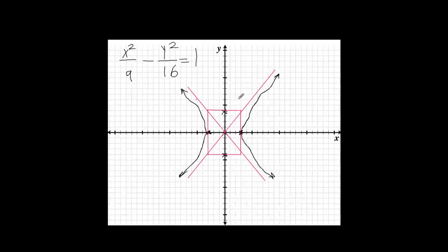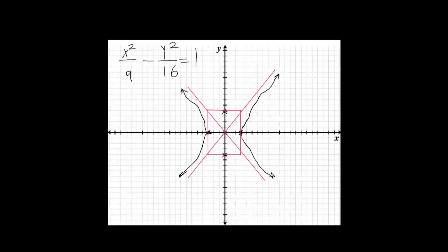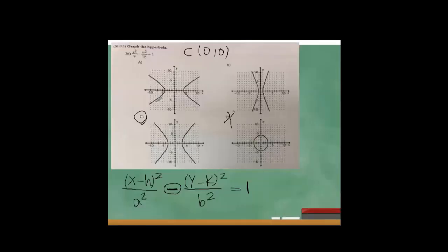If y comes first in the equation, the hyperbola opens along the y-axis instead. Looking at the answer choices, D is eliminated because it's a circle. Counting the vertex distance from center: option B shows 4 units — that's not right since we need 3. Option C shows 3 units right and left, matching our calculation. Answer C is the correct graph of this hyperbola.